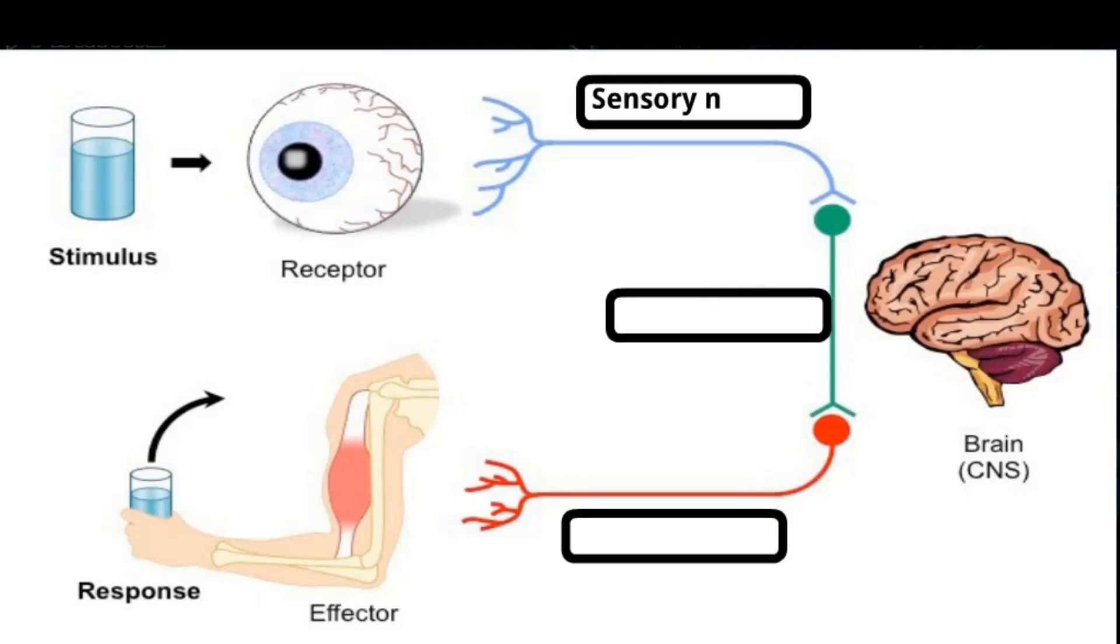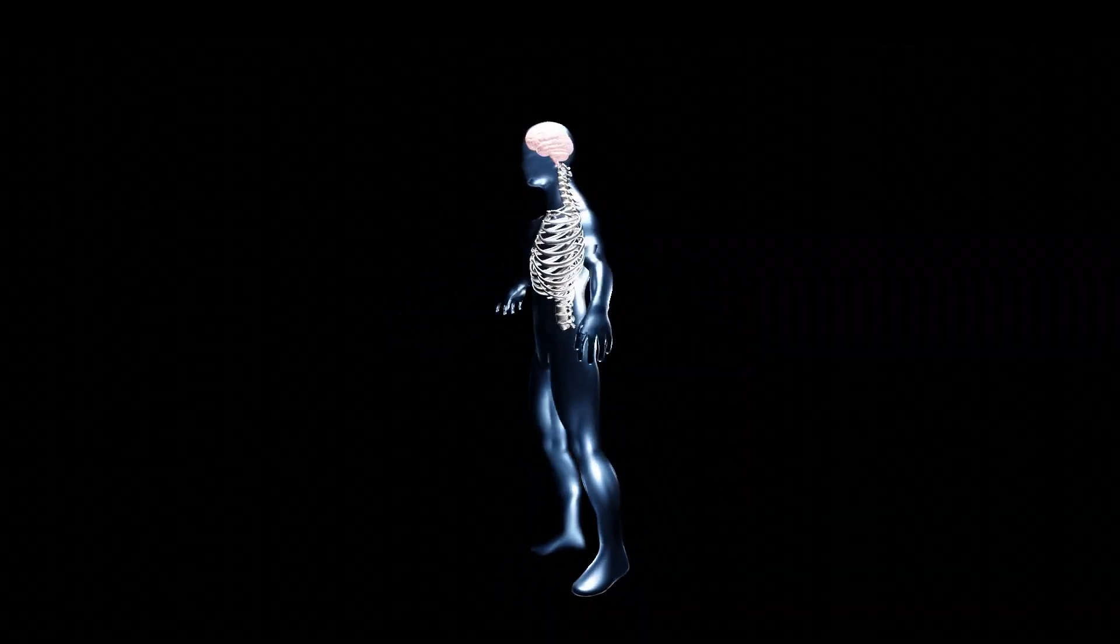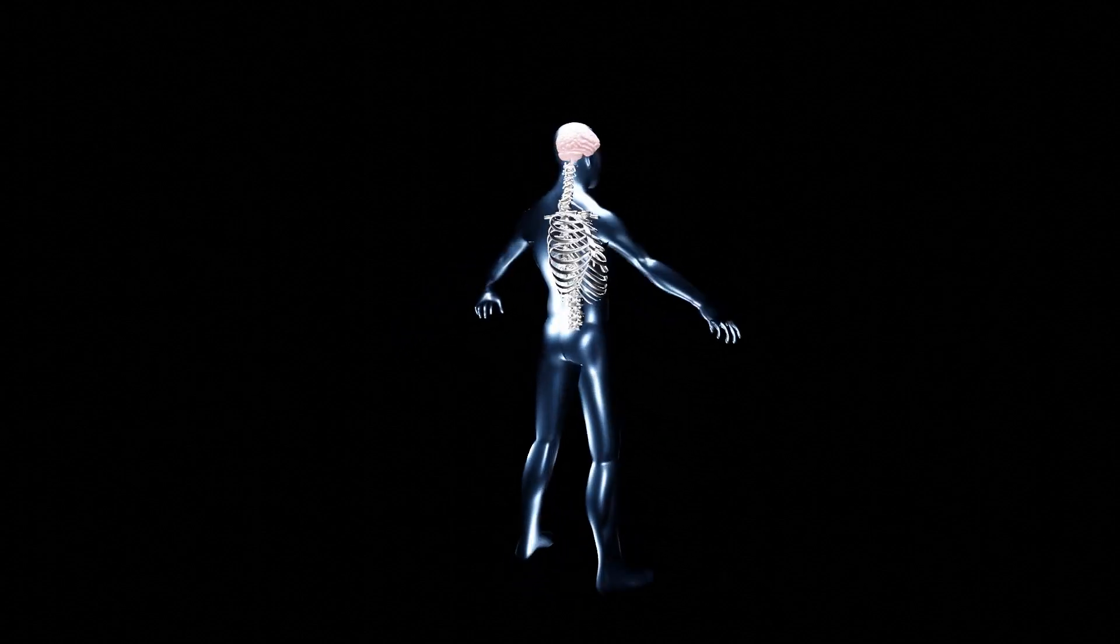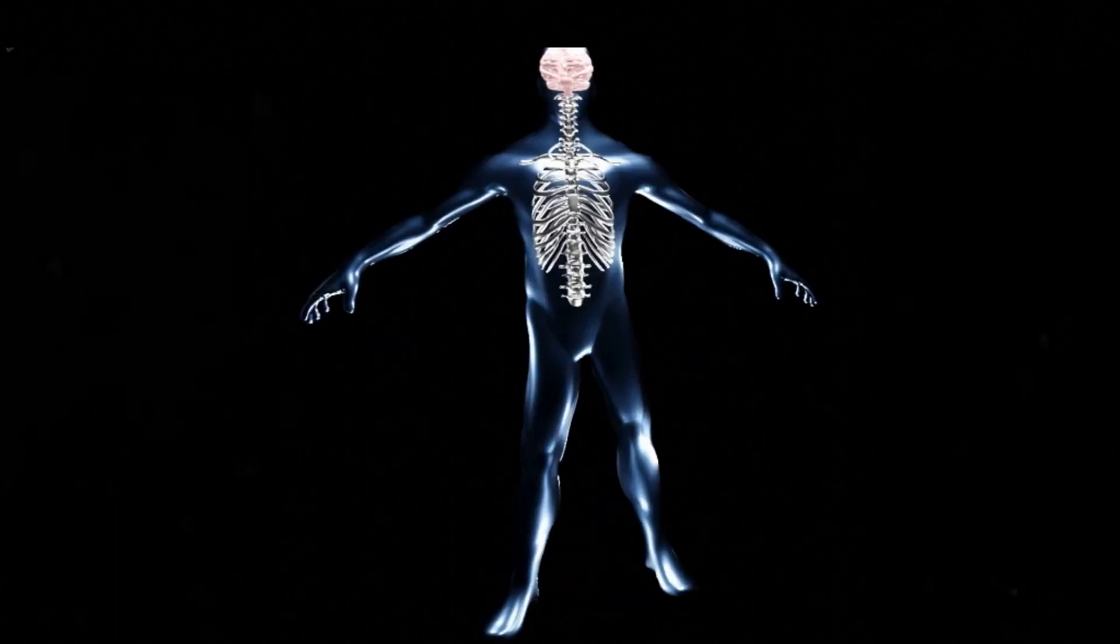Sensory neurons carry nerve impulses from the eye to the central nervous system. Interneurons form a link between sensory and motor neurons. Motor neurons carry nerve impulses to muscles. The central nervous system acts as a control center of the whole nervous system. It comprises the brain and spinal cord.